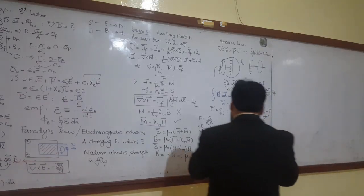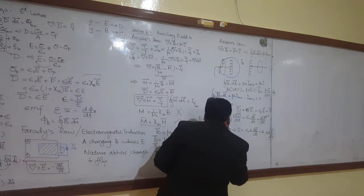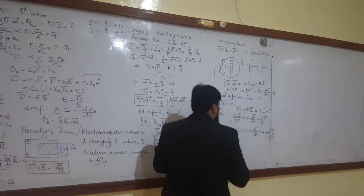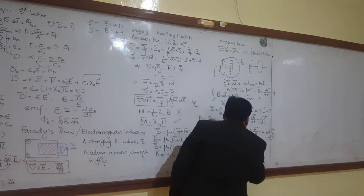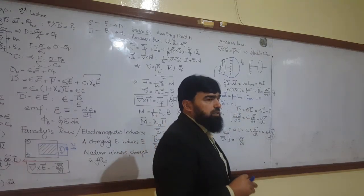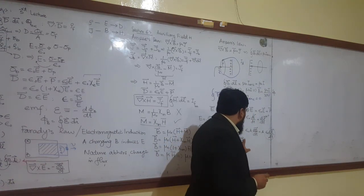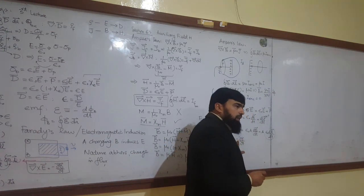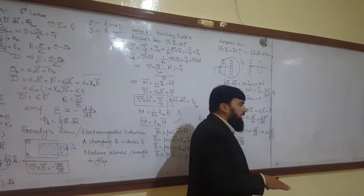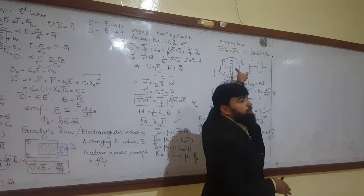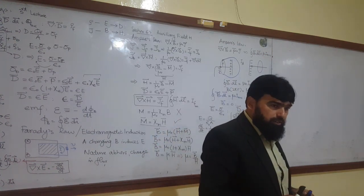We can see this same thing from Gauss's law. We know the continuity equation: the divergence of the current density J is equal to minus del-rho over del-t. The minus sign is there because rho is decreasing with time — in order to compensate the decrease we write the minus sign. But we don't have this issue here — rho is increasing with time, the charge density is increasing with time, so we don't need this minus sign here.